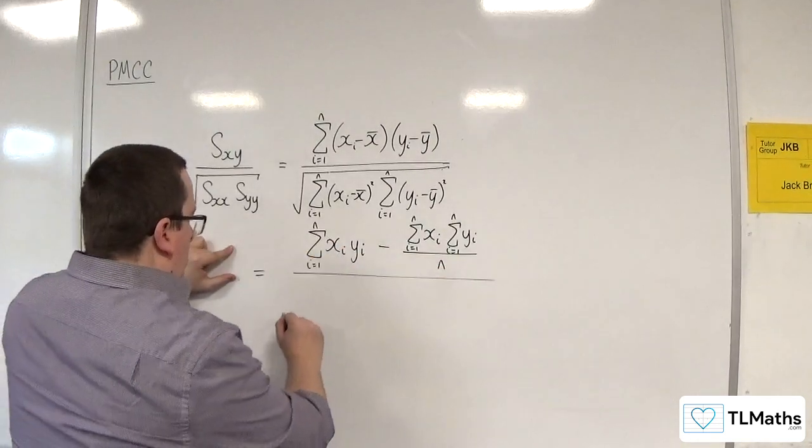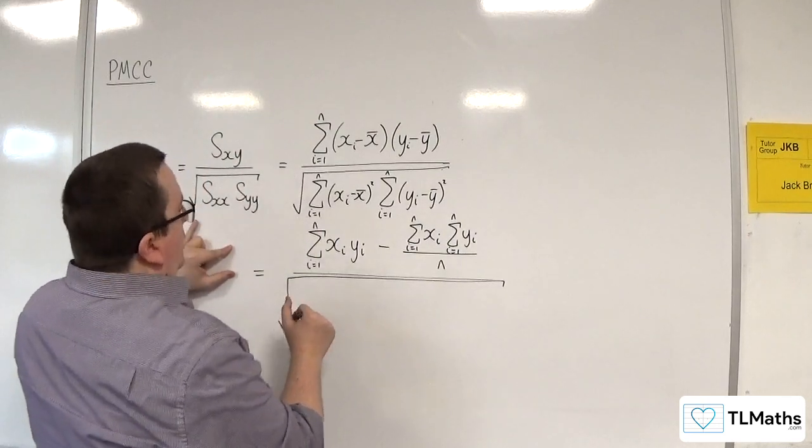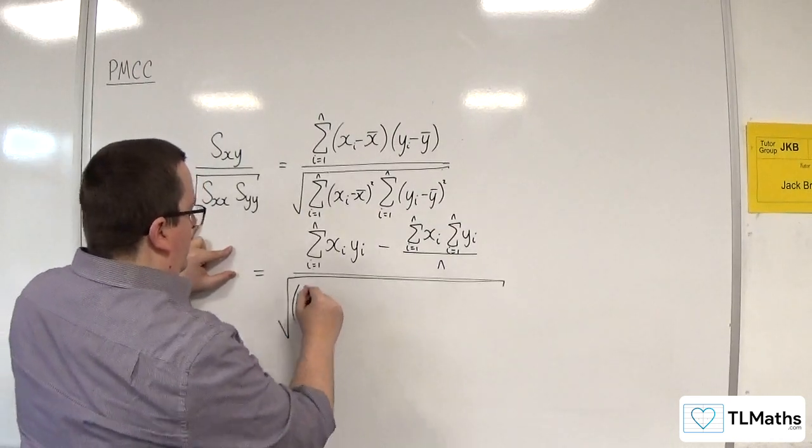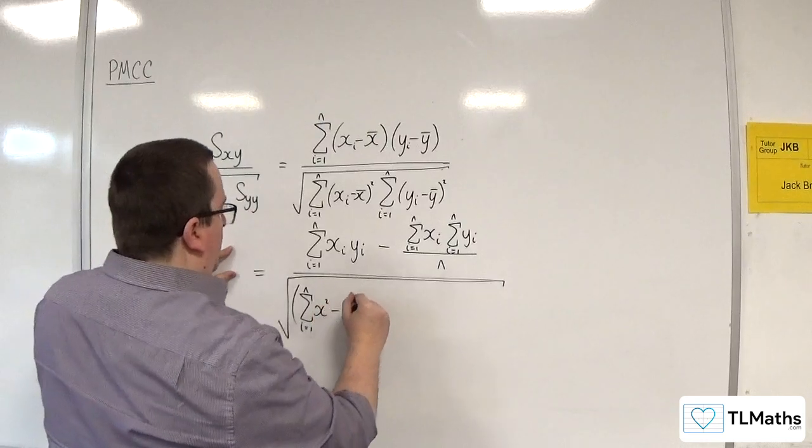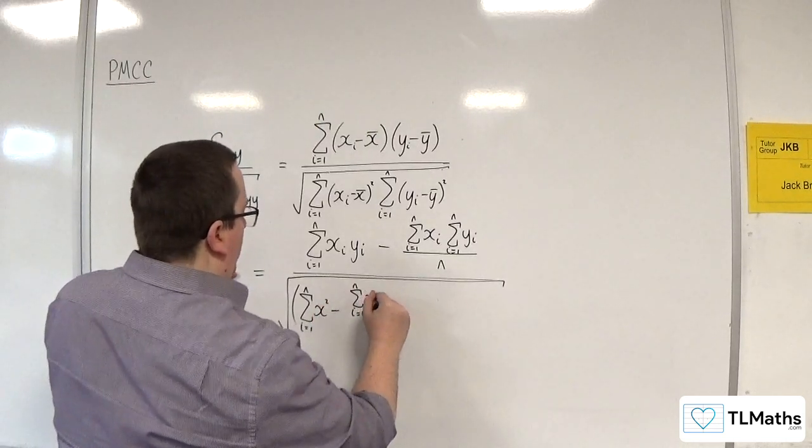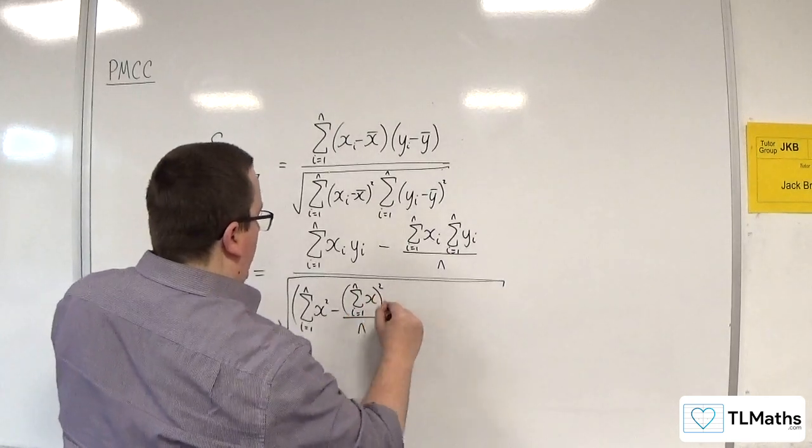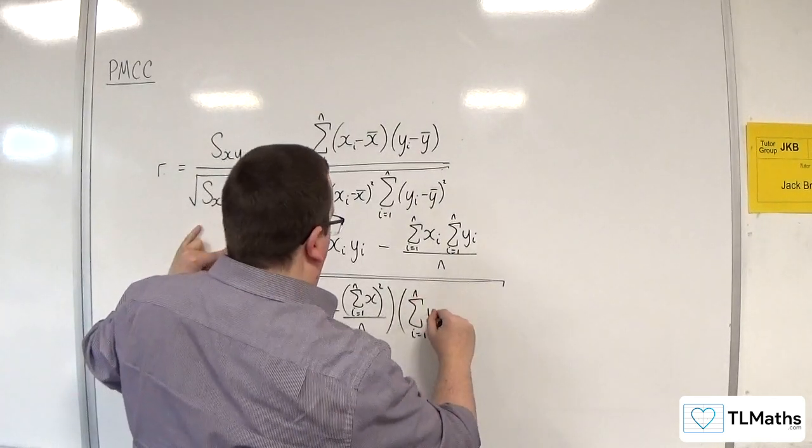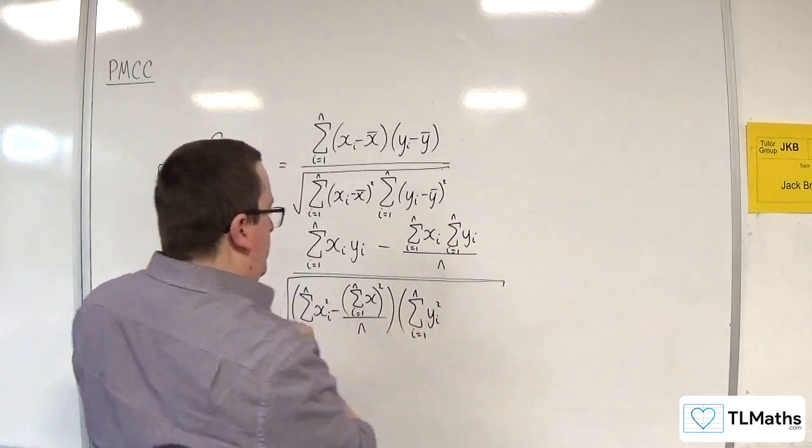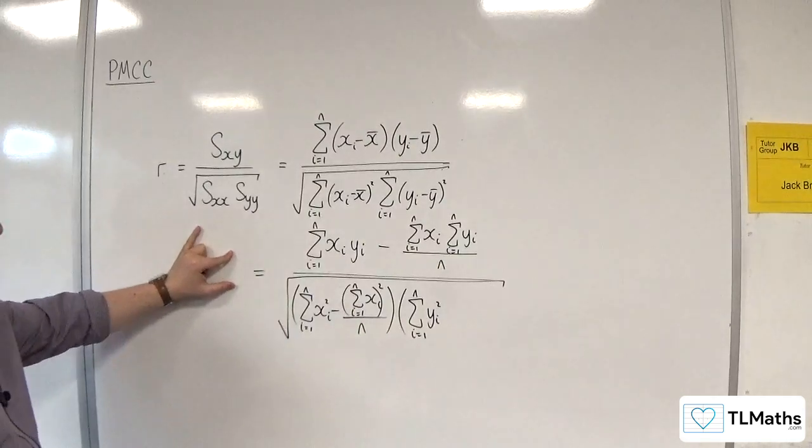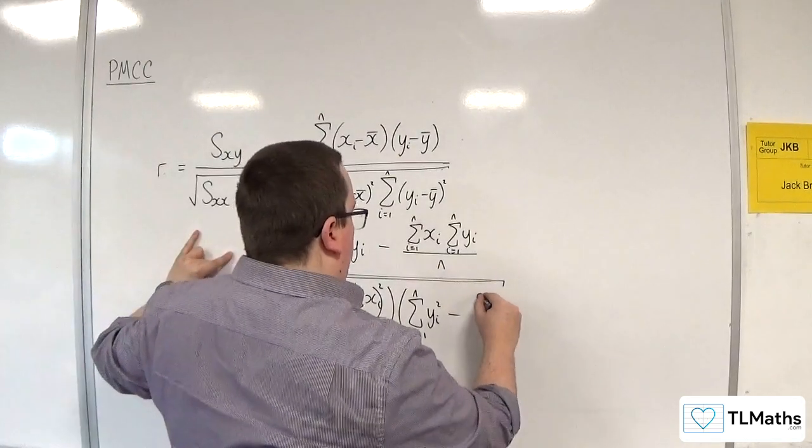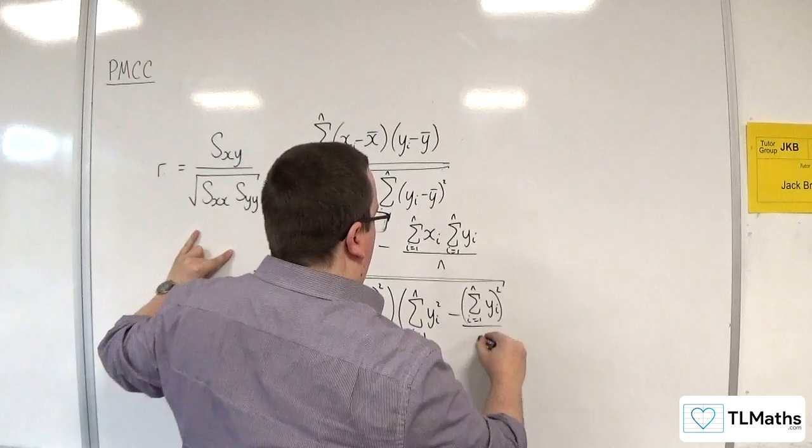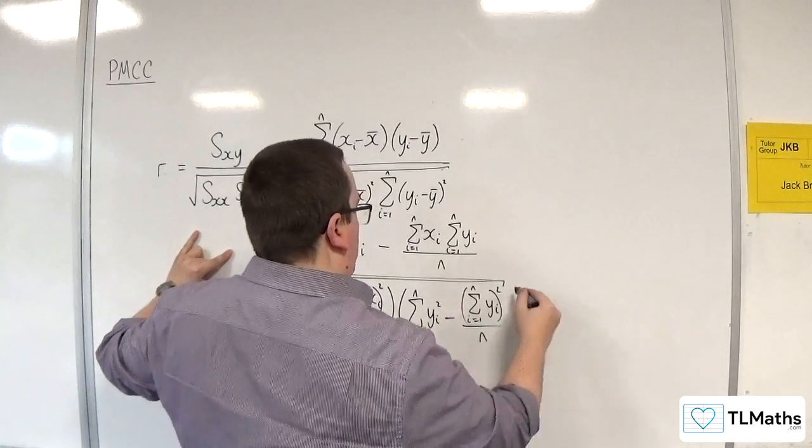And then you've got the square root of, you've got the sum. So in a bracket from I equals 1 to N of XI, so in a bracket from I equals 1 to N of XI all squared over N times by the sum from I equals 1 to N of YI squared. Well, they should have I equals 1 to N of YI all squared over N. Like that.